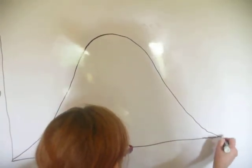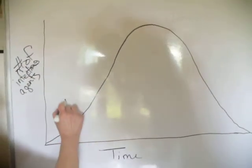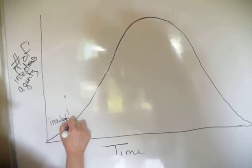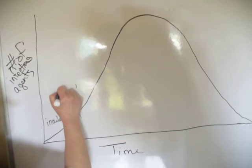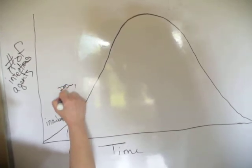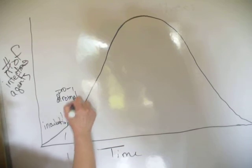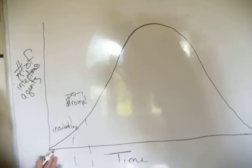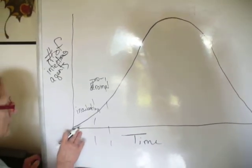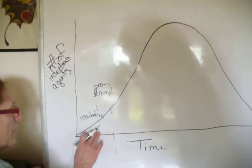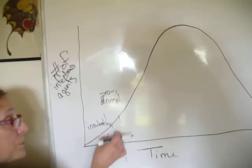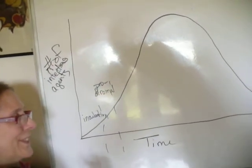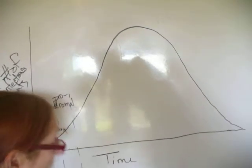We have incubation, then we have prodromal. Incubation is the time between exposure to the disease-causing organism and there being any vague symptoms. Prodromal is when you're just starting to feel a little bad — there are some vague symptoms but you're not really sick yet.